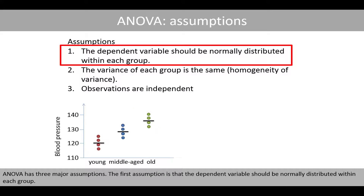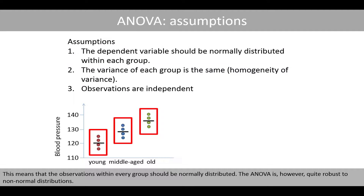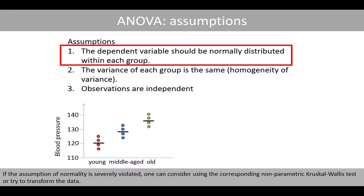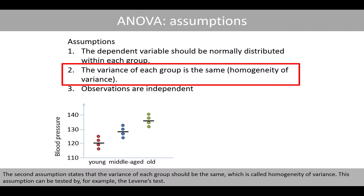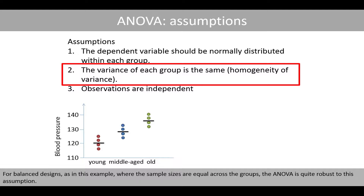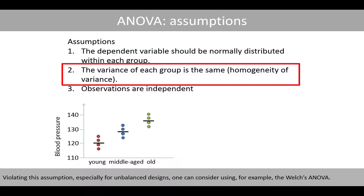ANOVA has three major assumptions. The first assumption is that the dependent variable should be normally distributed within each group. The ANOVA is however quite robust to non-normal distributions. If the assumption of normality is severely violated, one can consider using the corresponding non-parametric Kruskal-Wallis test or try to transform the data. The second assumption states that the variance of each group should be the same, which is called homogeneity of variance. This assumption can be tested by, for example, Levene's test. For balanced designs, as in this example, where the sample sizes are equal across the groups, the ANOVA is quite robust to this assumption. Violating this assumption, especially for unbalanced designs, one can consider using, for example, the Welch's ANOVA.